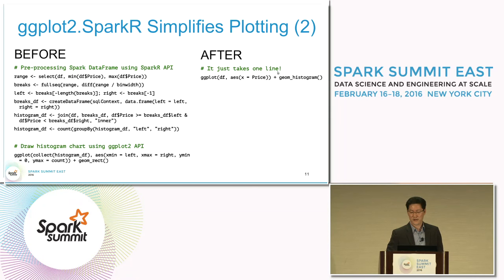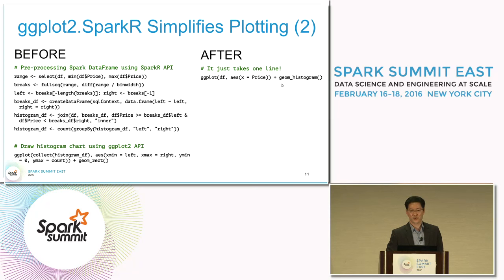You can take the Spark data frame as input to the familiar ggplot2 API, and it just draws the histogram graph with just one line.